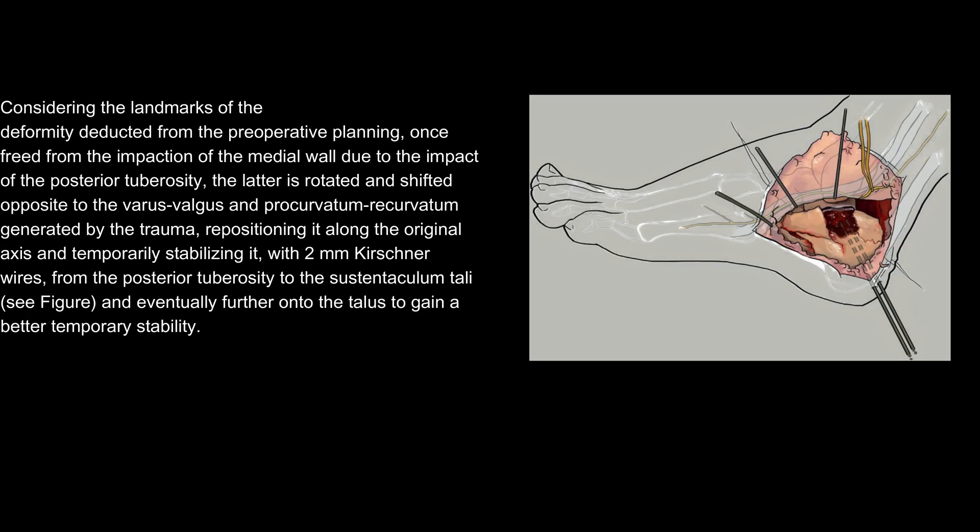Considering the landmarks of the deformity deduced from the preoperative planning, once freed from the impaction of the medial wall, the posterior tuberosity is rotated and shifted opposite to the varus-valgus and procurvatum-recurvatum generated by the trauma, repositioning it along the original axis and temporarily stabilizing it with 2 mm Kirschner wires from the posterior tuberosity to the sustentaculum tali, and eventually further onto the talus to gain better temporary stability.